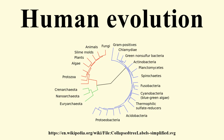In 1925, Raymond Dart described Australopithecus africanus. The type specimen was the Taung child, an Australopithecus infant discovered in a cave. The child's remains were a remarkably well-preserved tiny skull and an endocranial cast of the brain. Although the brain was small, its shape was rounded, unlike that of chimpanzees and gorillas, and more like a modern human brain. Also, the specimen showed short canine teeth, and the position of the foramen magnum was evidence of bipedal locomotion. All of these traits convinced Dart that the Taung child was a bipedal human ancestor, a transitional form between apes and humans.